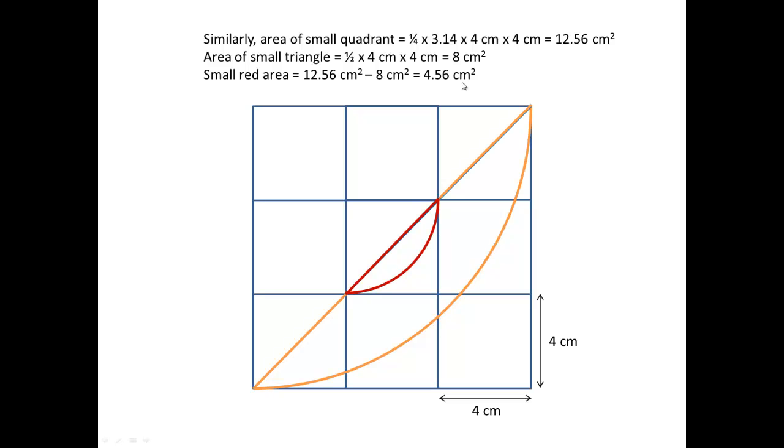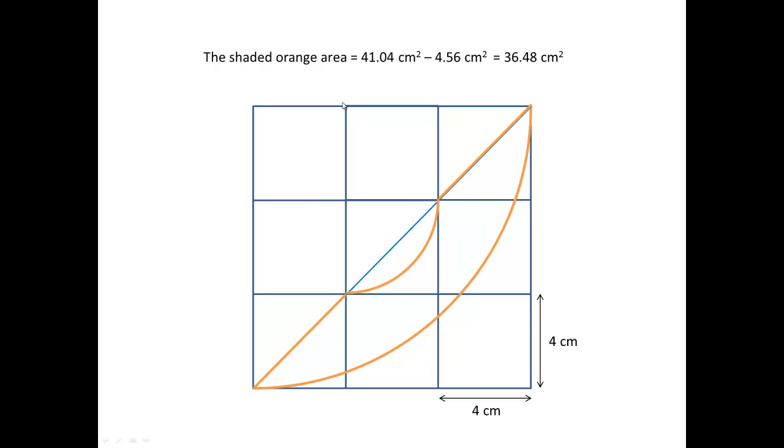So, you may have guessed already, we will simply take the large orange watermelon figure to minus this red part to give us our required answer. And that will be 41.04 cm squared minus 4.56 cm squared to give us our required answer of 36.48 cm squared.